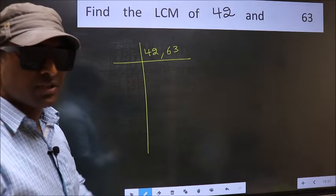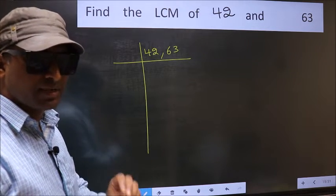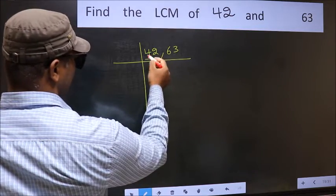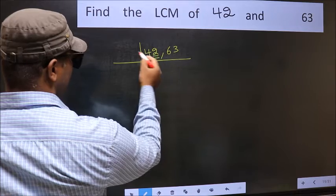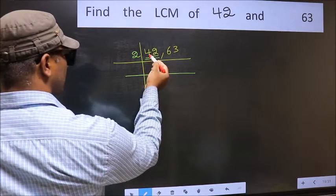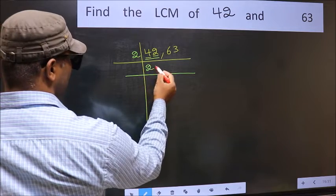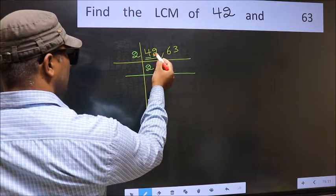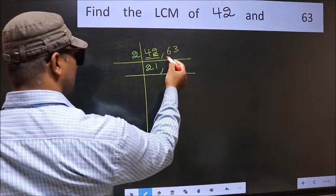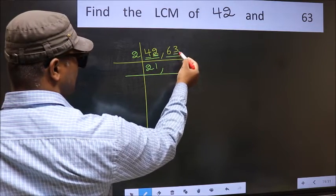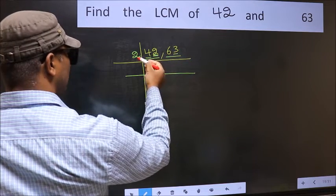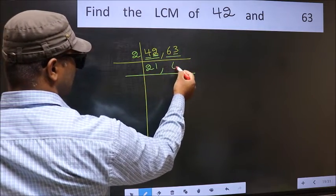Now you should focus on the first number, which is 42 here. In this number, the last digit is 2, even, so take 2. First number 4. When do we get 4 in 2 table? 2 times 2 is 4. The other number 2. When do we get 2 in 2 table? 2 times 1 is 2. The other number 63. Last digit 3, not even. So this is not divisible by 2. So you write it down as it is.